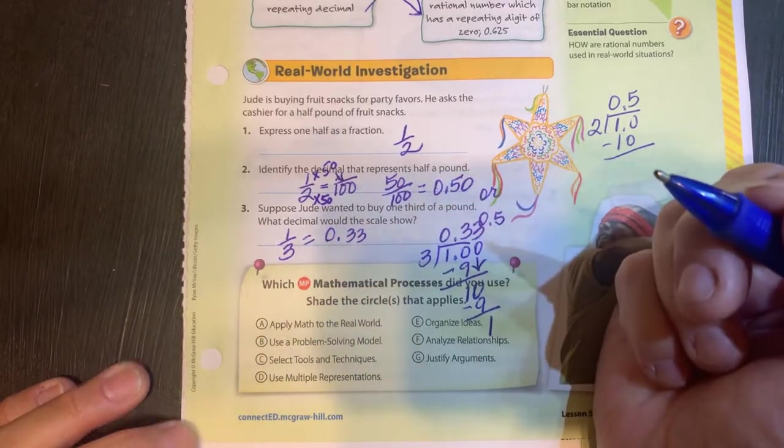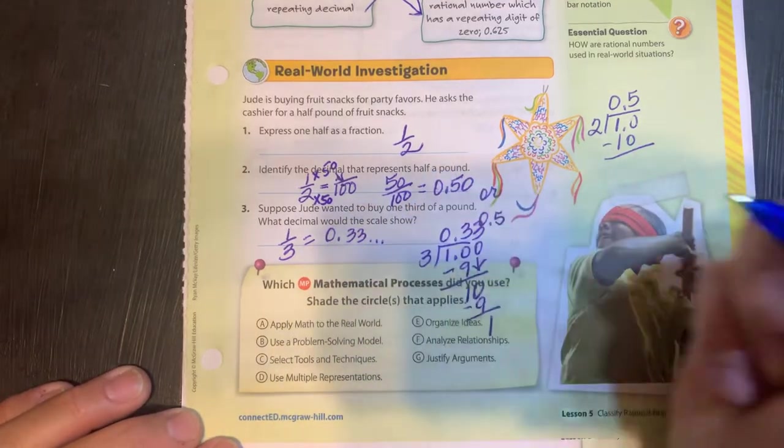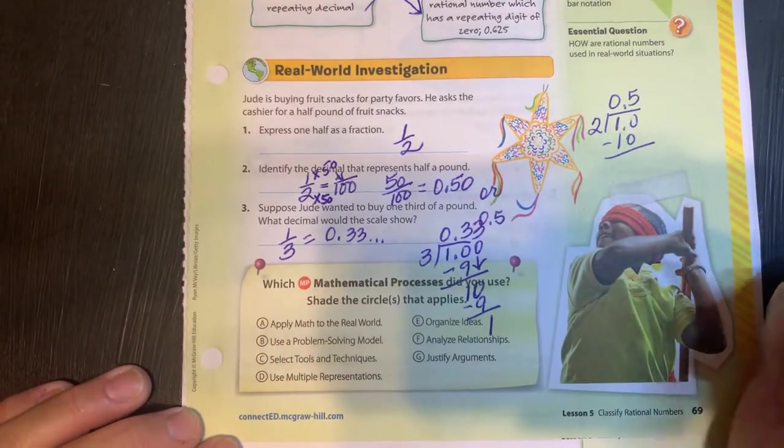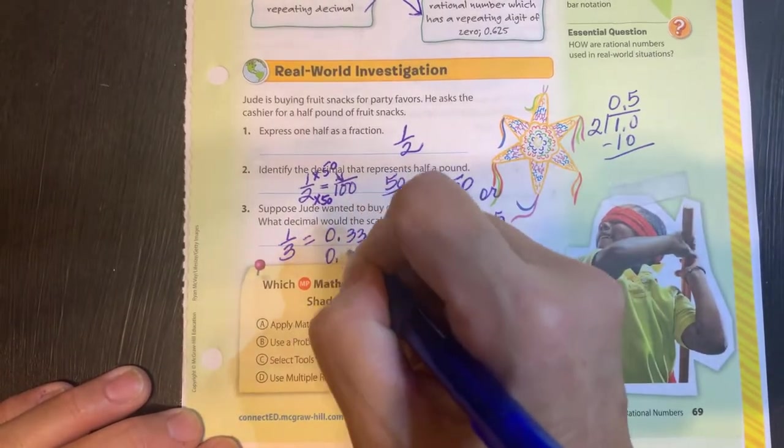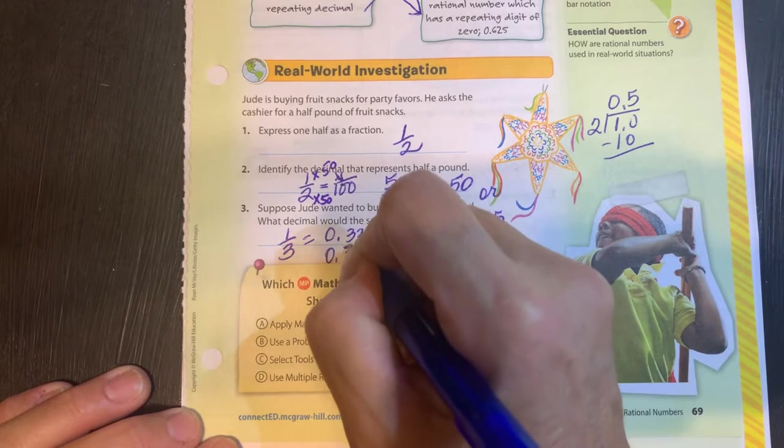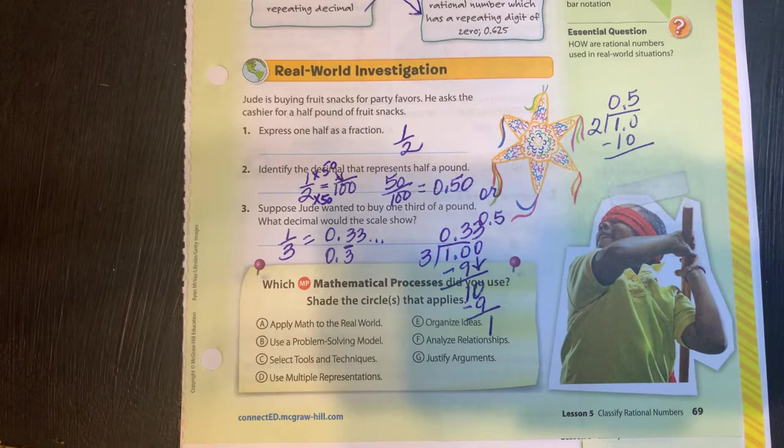You can indicate that it's repeating. There's the dot notation like that. Also I like the bar notation myself where you just put the bar over the numbers that repeat.